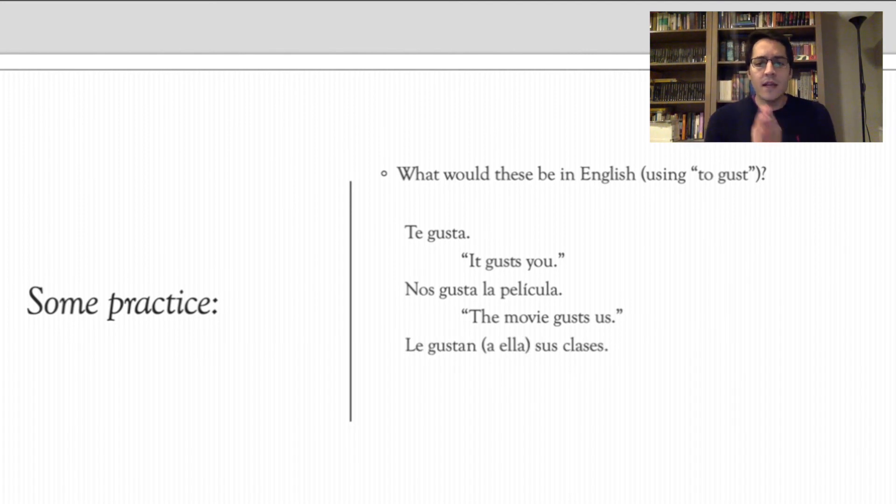Moving on. Le gustan a ella, sus clases. You got a guess? All right. Her classes gust her. Does that make sense? Her classes gust her. This is a little strange because in English we have her as a possessive and her as an indirect object. So, the le would be the ending her, the second her at the end of the sentence. And then the sus, for that's the possessive of classes, would be the her before classes. So, it kind of goes opposite.